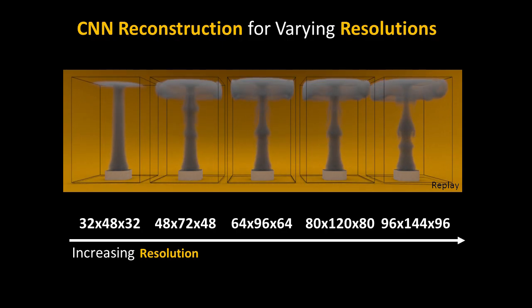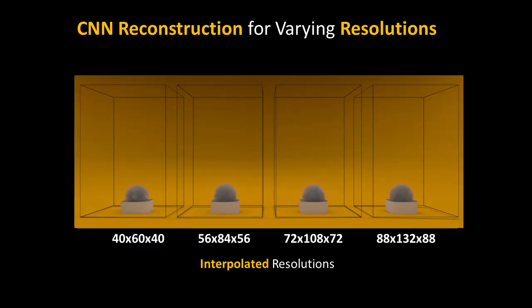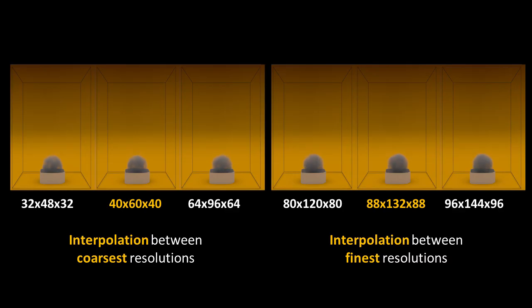Our method can also interpolate between non-conventional parameters such as grid resolution. In this example, we generated samples with increasingly larger grid resolution from left to right. Then, coarse resolutions are upsampled to match the finest one and fed into our network. Our network is able to output in-betweens for intermediary resolutions.